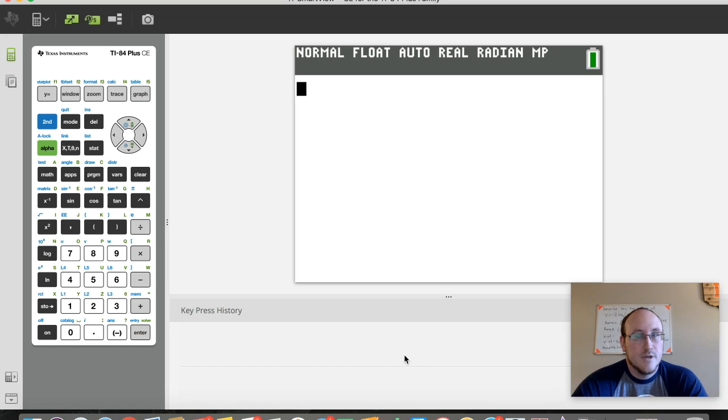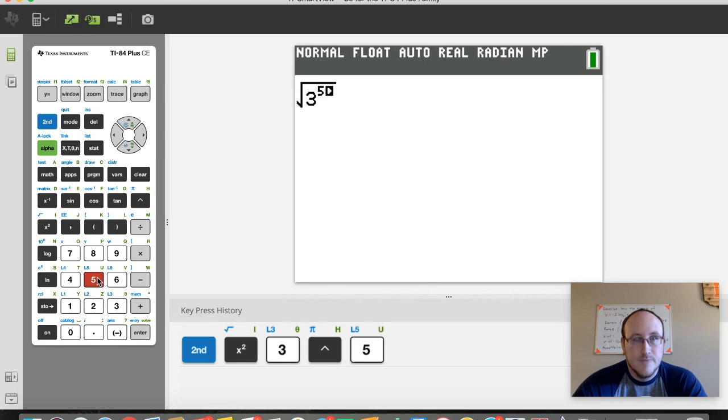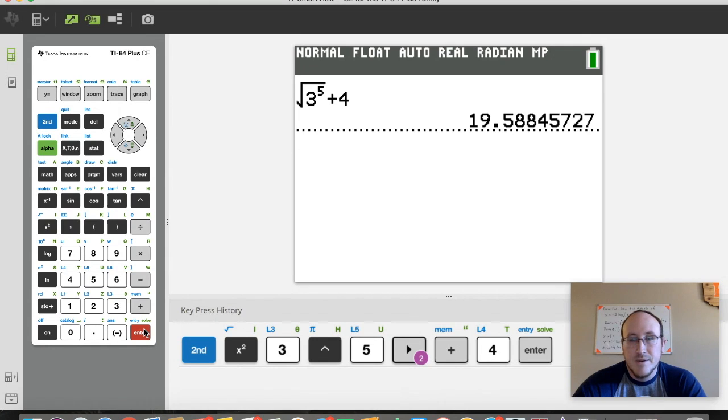Okay, so we just solved for the y-intercept, sorry, the x-intercept algebraically. Now we're going to go ahead and put that into our calculator with that. So we had the square root of 3 to the 5th power and then plus 4, which we can see is about 19.59 roughly, if I round it to the nearest hundredth for that.